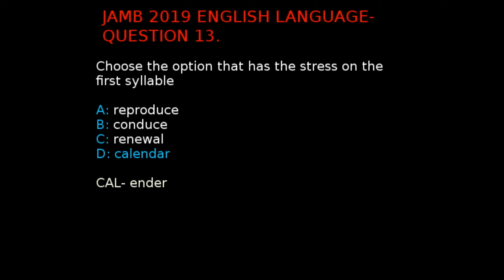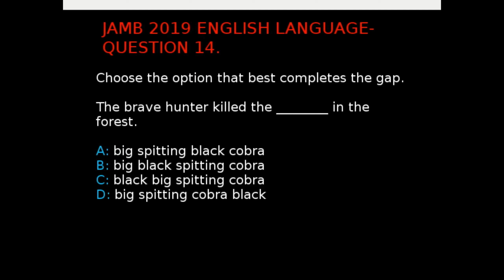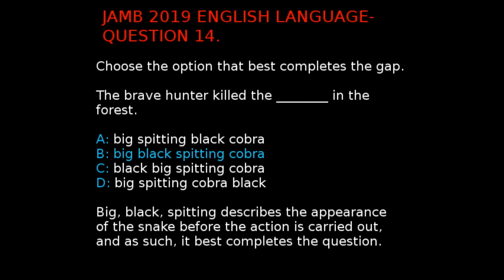Calendar is the only option that has its stress on the first syllable. Jan 2019 English Language Question 14. The question says, choose the option that best completes the gap: 'The brave hunter killed the dash in the forest.' The options are: A. Big spitting black cobra, B. Big black spitting cobra, C. Black big spitting cobra, D. Big spitting cobra black. The correct answer is B. Big black spitting cobra, because size usually comes before color, and then the action.